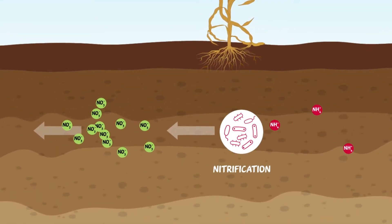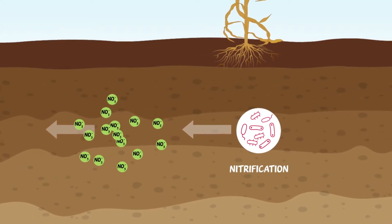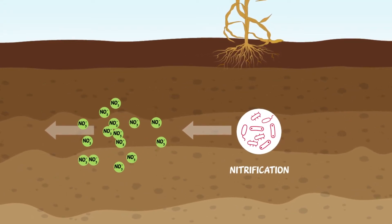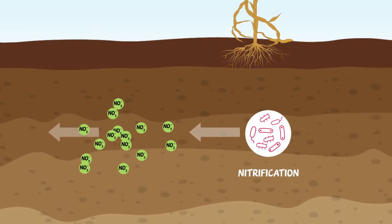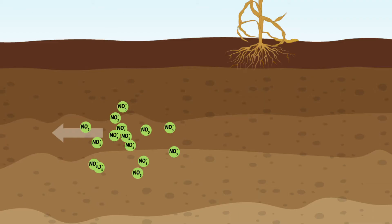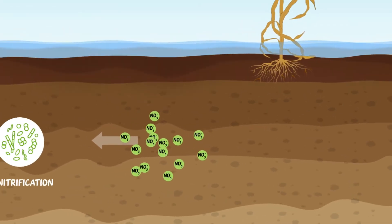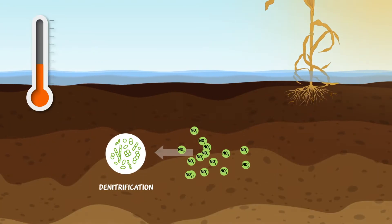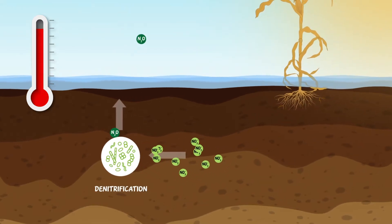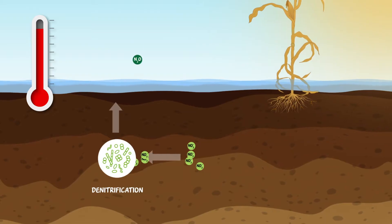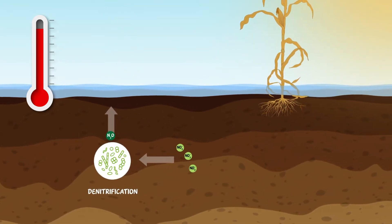Emissions usually grow exponentially with the addition of nitrogen and can vary between 1 and 13 percent of the nitrogen applied. Lack of oxygen — for example due to waterlogging — and an increase in temperature promote denitrification and thereby the release of nitrous oxide, particularly in acidic soils.